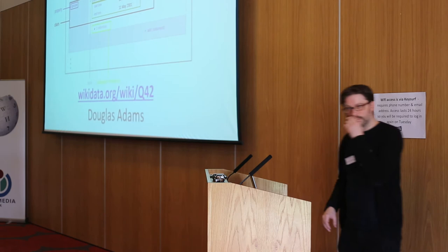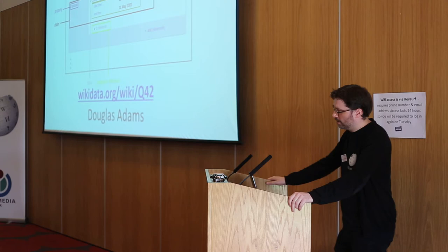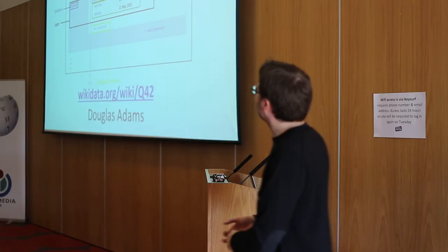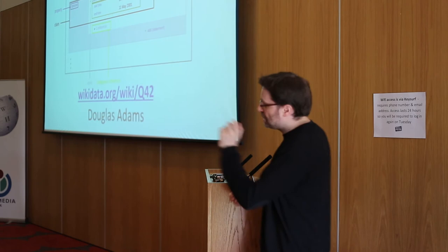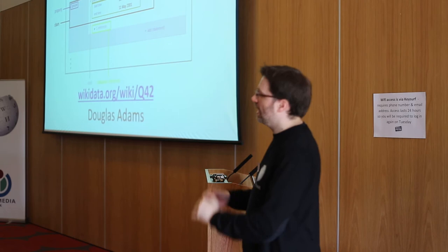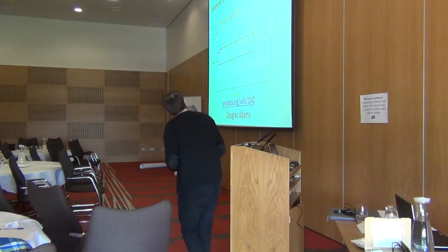You can take a concept and translate it into other languages because Wikidata stores those labels across languages. If we think about how data is stored on Wikidata: everything is given a unique identifier, and for the writer Douglas Adams his unique identifier is Q42 — which is quite apt. We have a description — 'English writer and humorist' — plus aliases he's known as. Within that item of data we have statements, and every statement has a property and a value for that property.